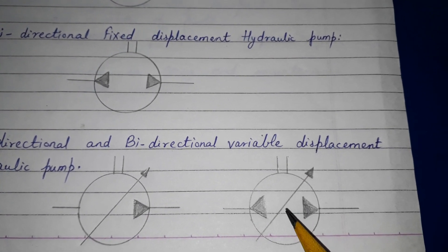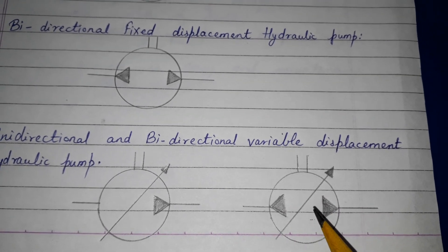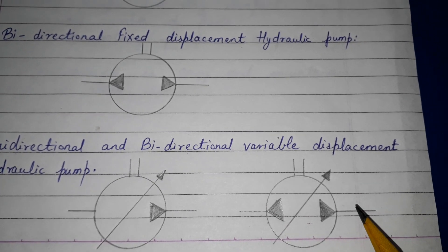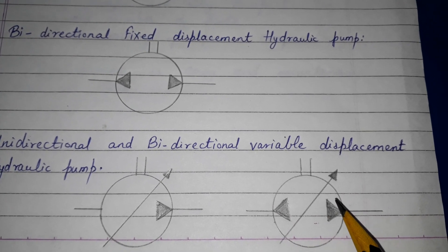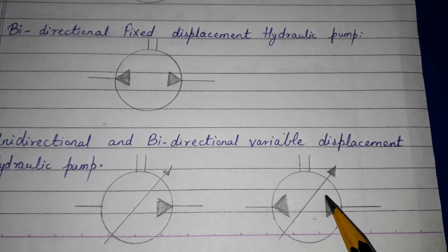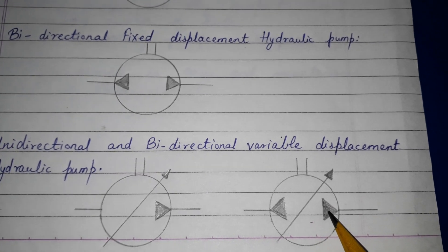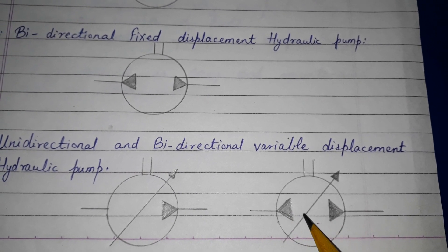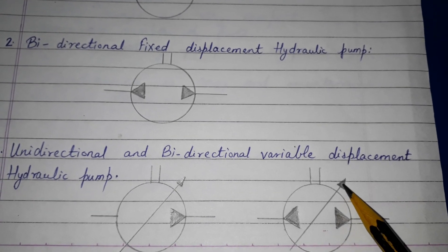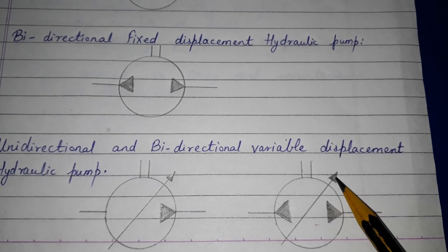Then the bidirectional variable displacement pump. As you can see, the flow is in two directions — that's why it is bidirectional. It is variable displacement because the discharge of this pump can be varied. The triangle is filled because it is a hydraulic pump, and the arrow in two directions plus the variable displacement arrow indicate variable discharge.